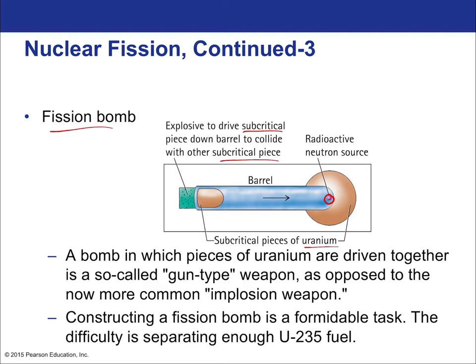When the conventional explosion drives the two subcritical pieces together in this gun-type design, the combined mass is now large enough to sustain a chain reaction and causes a nuclear explosion — far larger than the conventional explosion that initiated it. Certain radioactive elements release neutrons rather than alpha, beta, or gamma particles, and these are important neutron sources for fission.